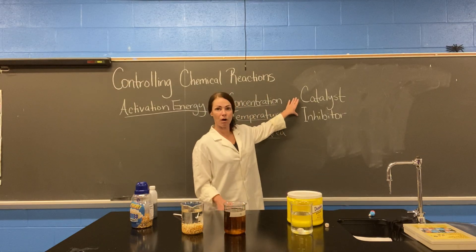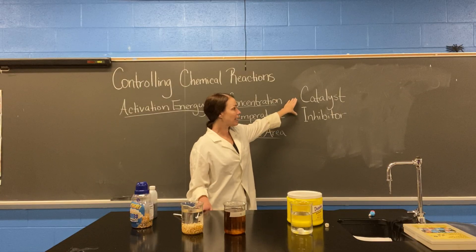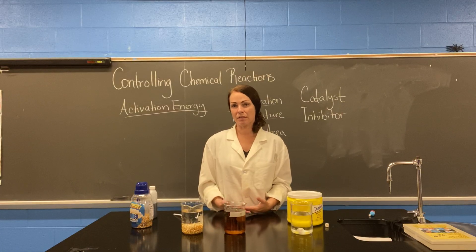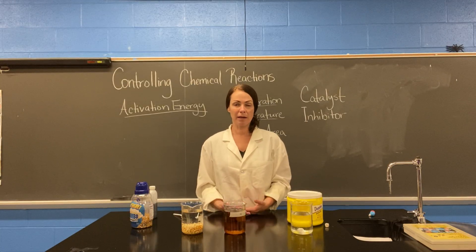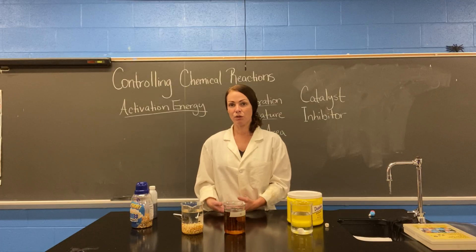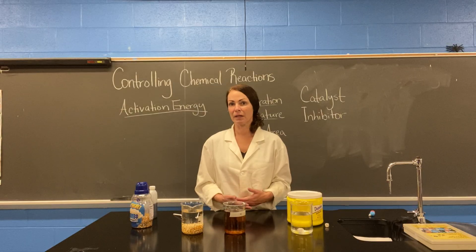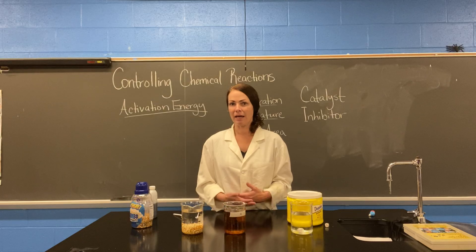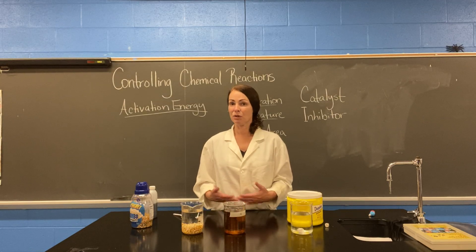These two words are also important when we talk about chemical reactions and controlling them. A catalyst is something we can add to substances to make a chemical reaction occur or to speed it up — it's anything that makes it go faster. Heat is a good example of a catalyst. If you add heat to your oven and put a cake in, it's going to start to cook because heat is the catalyst. If you place the cake in the oven without turning it on, it's never going to cook because you haven't added the catalyst.